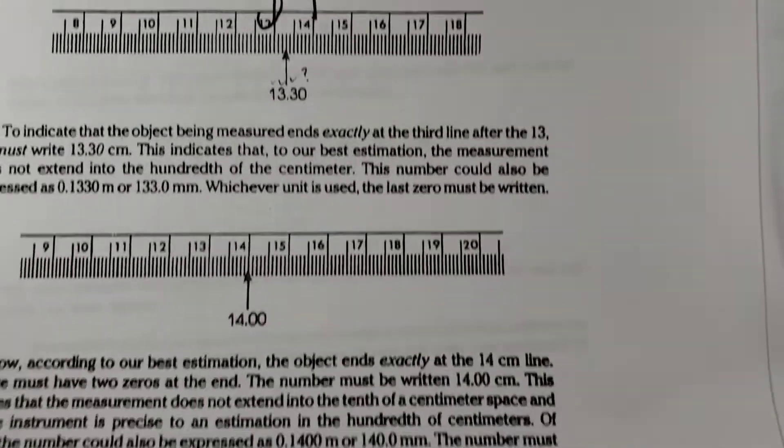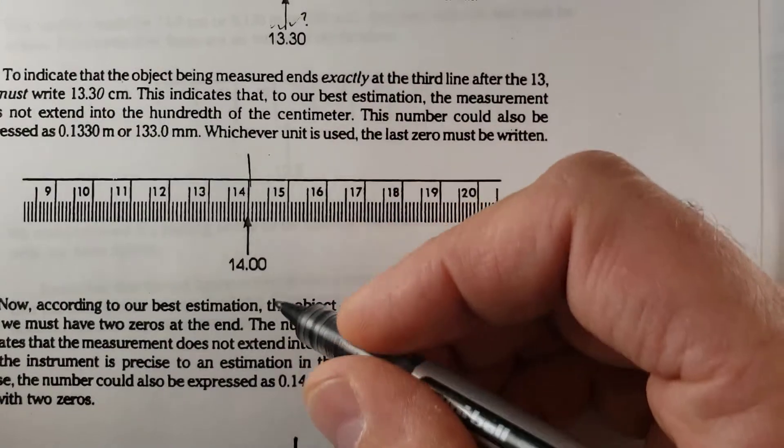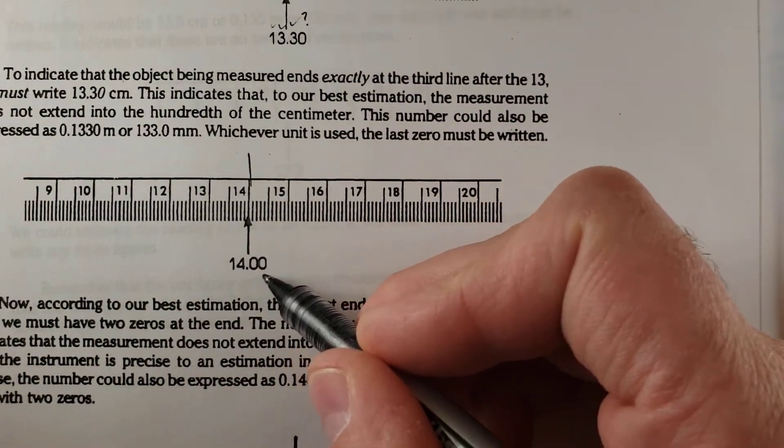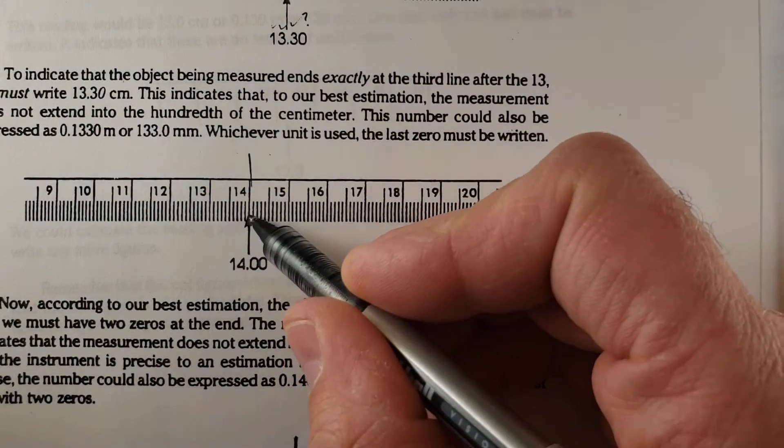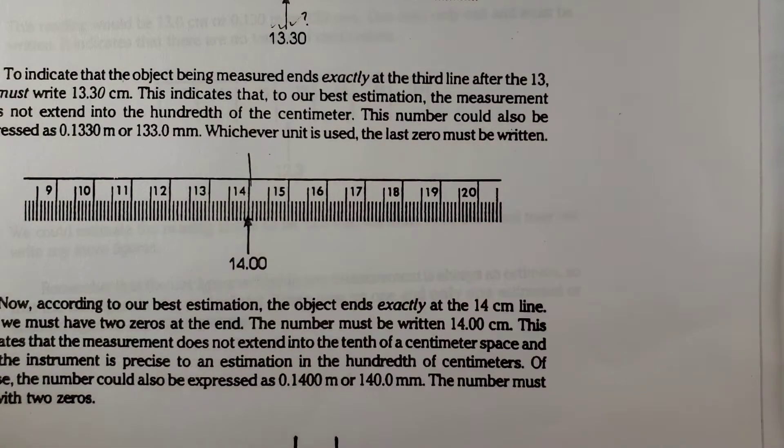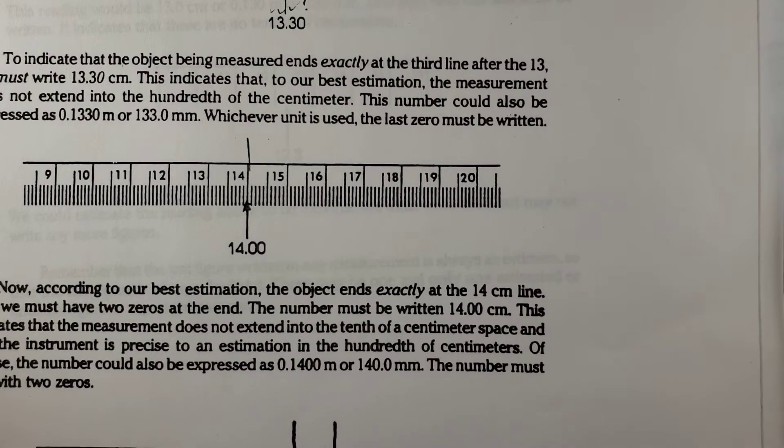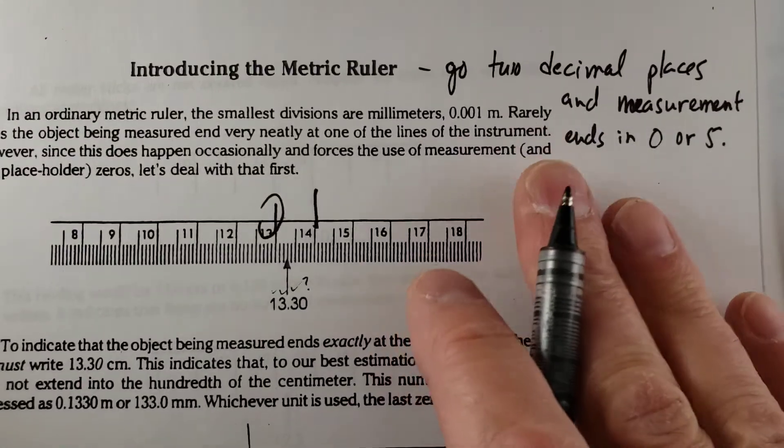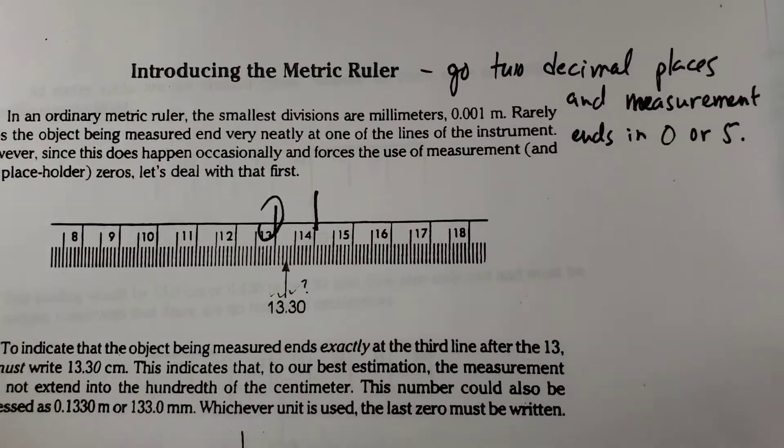Tricky one here is if it lands exactly on a whole number. So 14, we have to ensure that we put decimal zero zero. So it's on the 14.0 line, and it's not above it. So we added that extra zero there. So 14.00. Go two decimal places, ends in a zero or five.